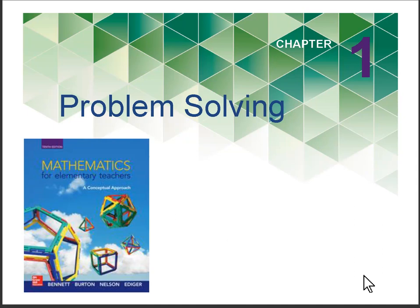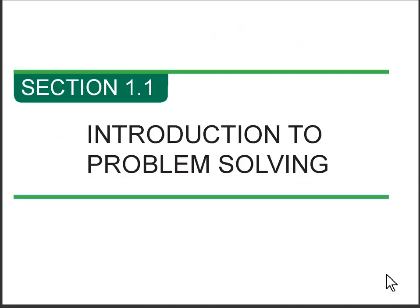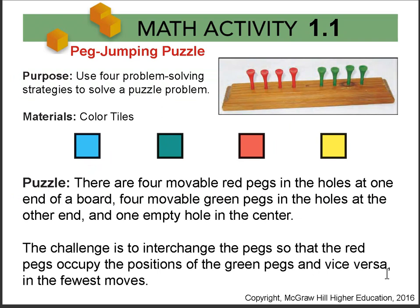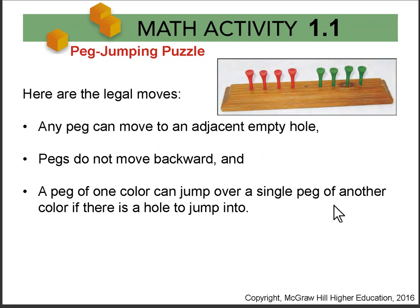In this video for chapter 1 section 1.1 we're going to talk about the peg jumping puzzle. There's a puzzle with four pegs on either side of different colors. The colors don't actually matter and we're going to switch the pegs from one side to the other. The rules are that a peg can move to an adjacent empty hole, pegs can't go the other direction, and a peg of one color can jump a peg of another color if there's a hole to jump into.